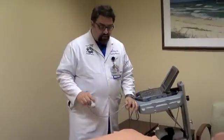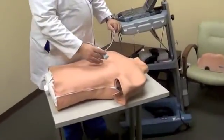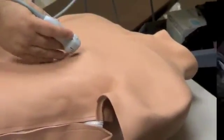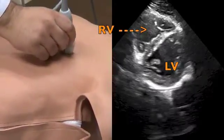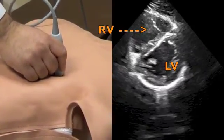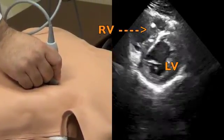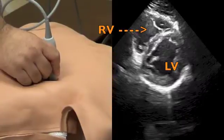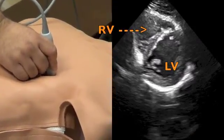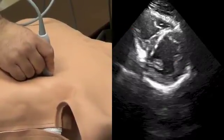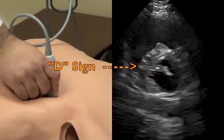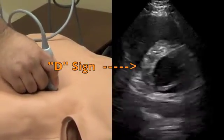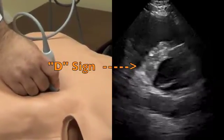Now let's look at the parasternal short axis to evaluate for right heart strain in the case of a potential pulmonary embolism. Place your probe at the mid-clavicular line at about the fourth to fifth intercostal space, with the indicator pointing towards the patient's left shoulder. You should visualize the short axis of the heart showing the left and right ventricle. The left ventricle is normally circular, while the right ventricle is more triangular. In the case of a pulmonary embolism, increased pressure in the right ventricle can produce bowing of the septum — what is called the D sign.